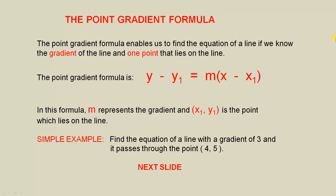The point gradient formula is y minus y one equals m outside of x minus x one. In this formula, m represents the gradient and x one y one is the point which lies on the line.